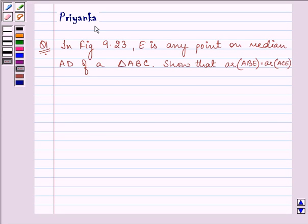Hi and how are you all today. My name is Priyanka, and the question says: In figure 9.23, E is any point on median AD of a triangle ABC. Show that area of ABE is equal to area of ACE.